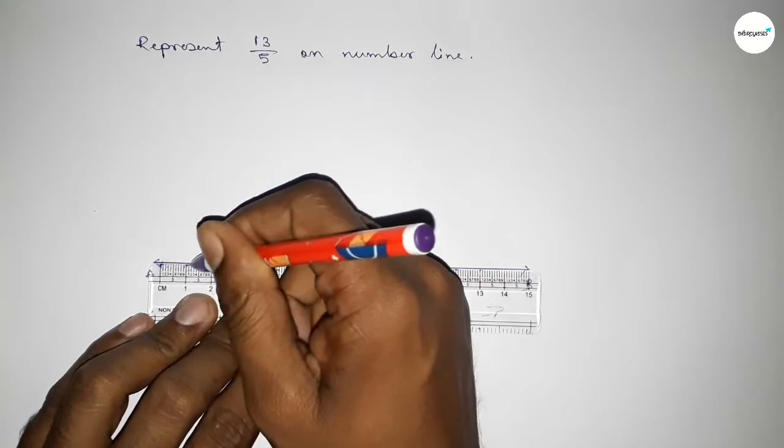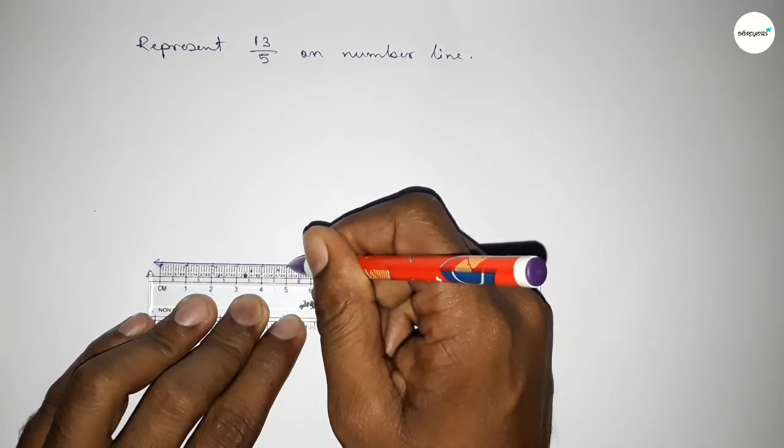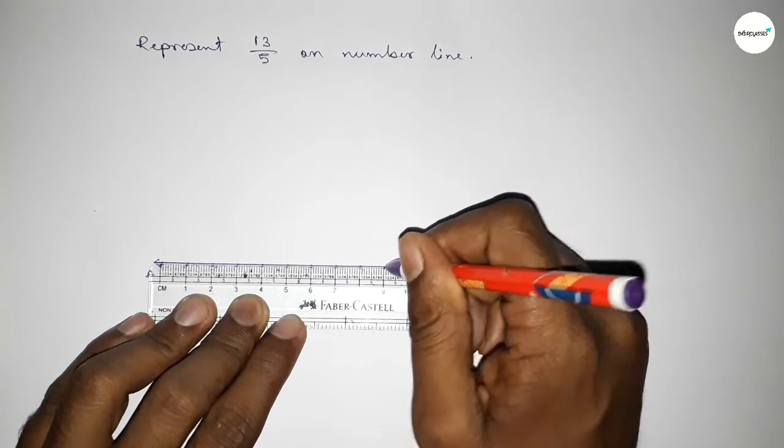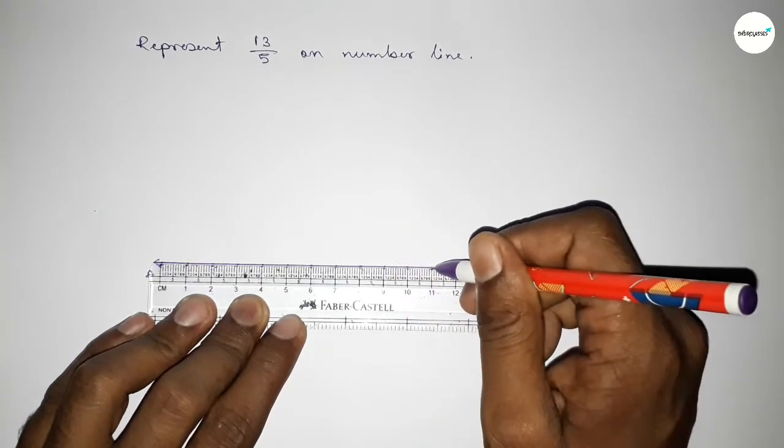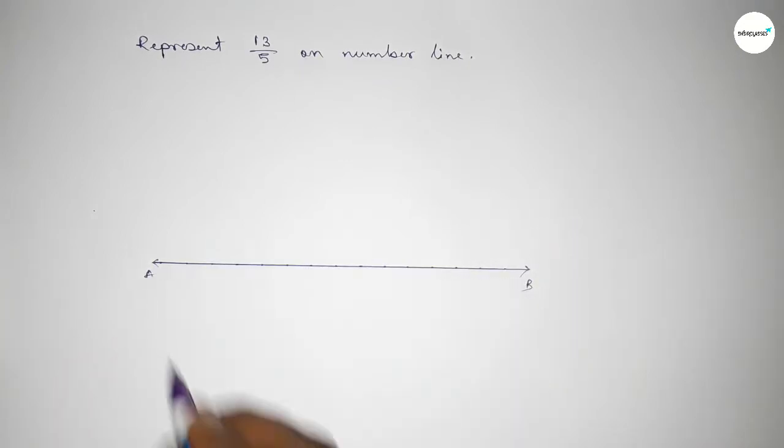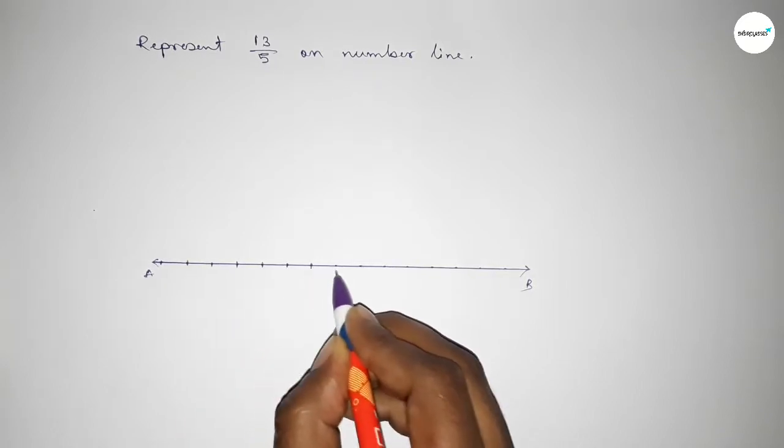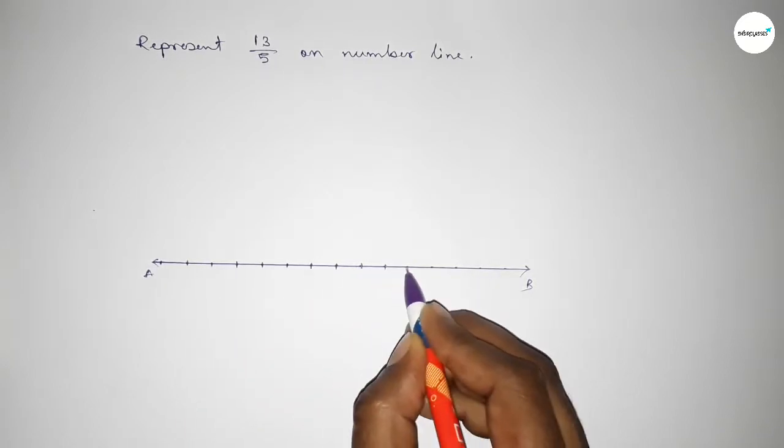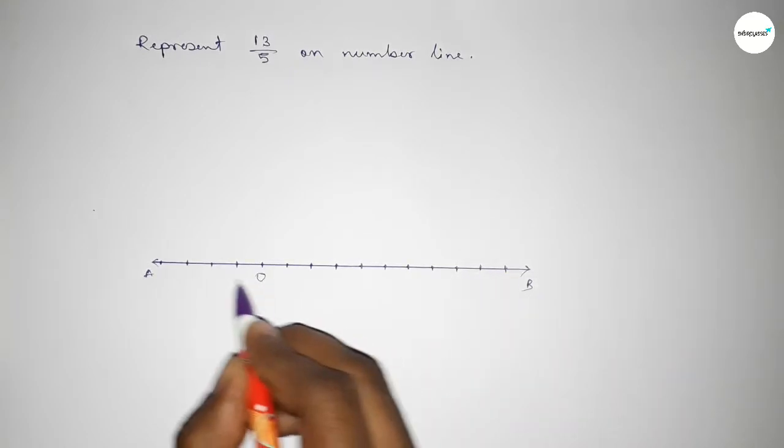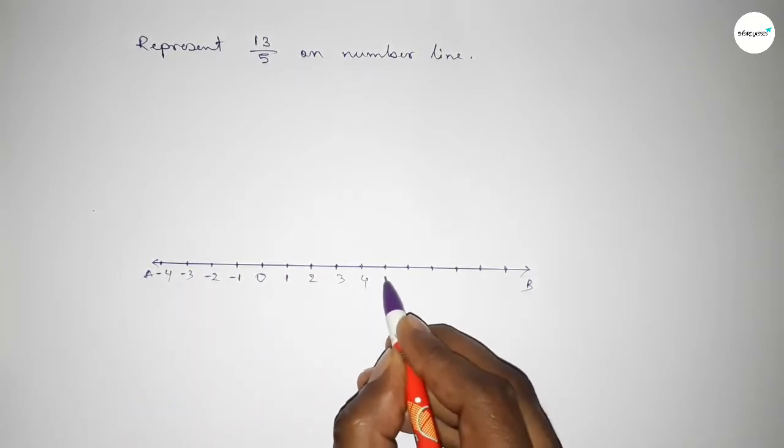First, marking the numbers on the line using a scale. We mark the numbers with deep color to understand perfectly. Now taking the starting number as zero, this side we have minus one, minus two, minus three, minus four, and this side plus one, two, three, four, five, six, seven, eight, nine, ten.